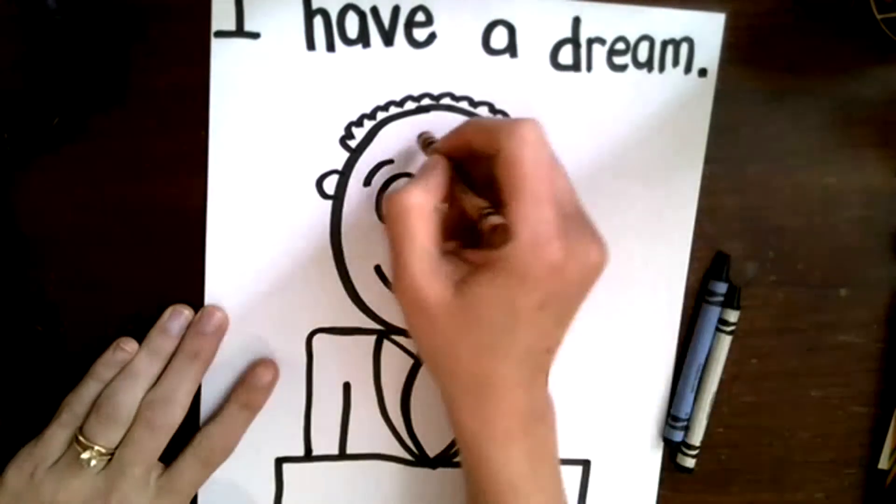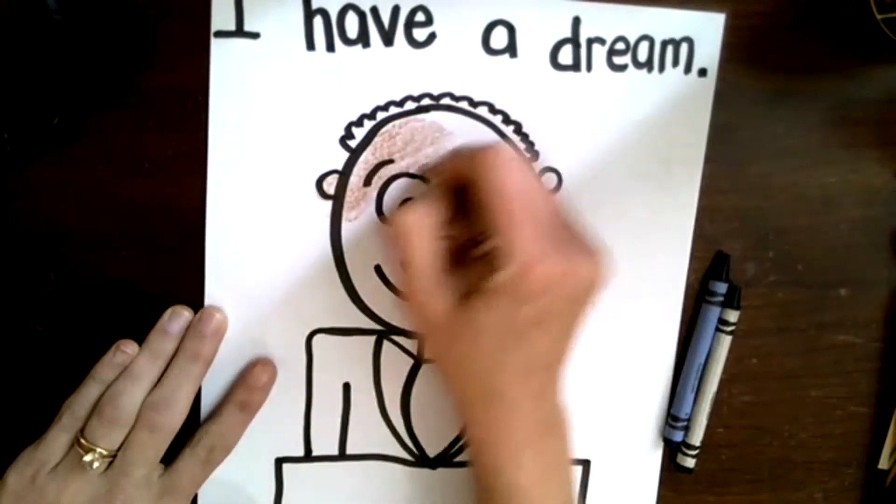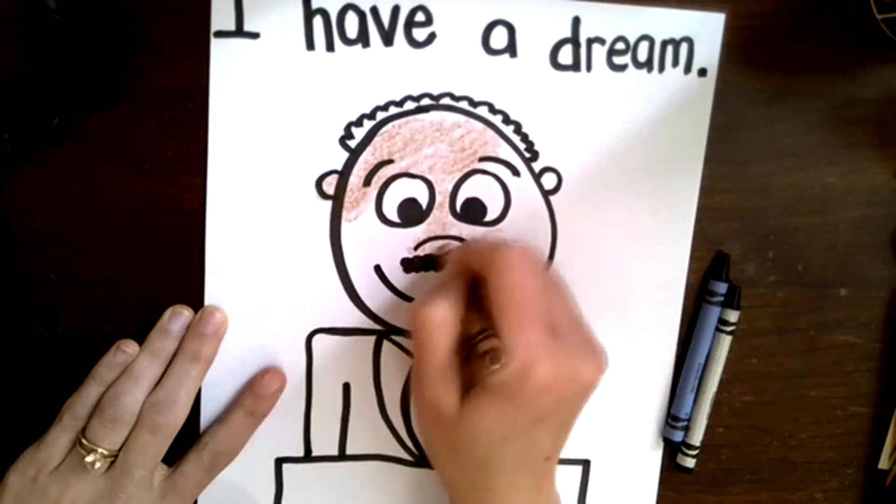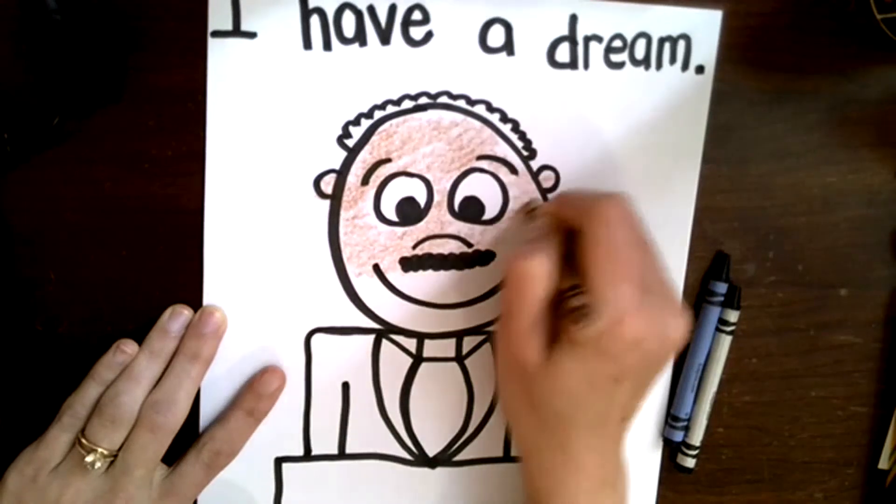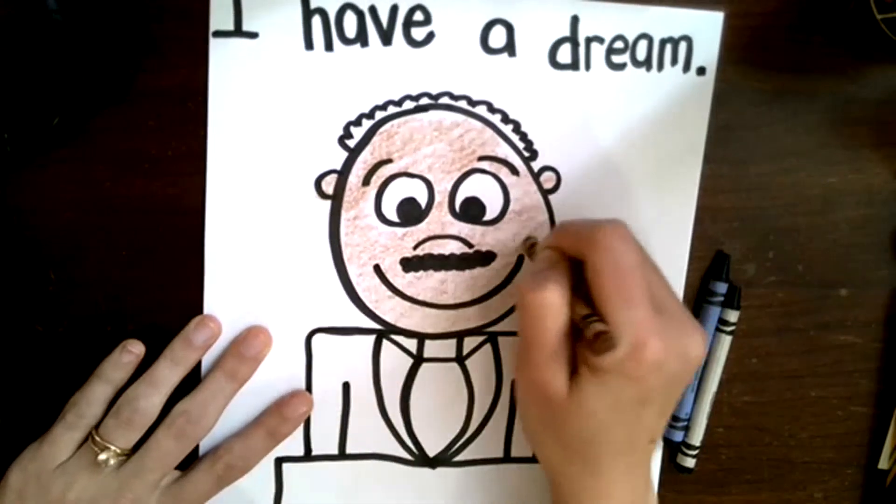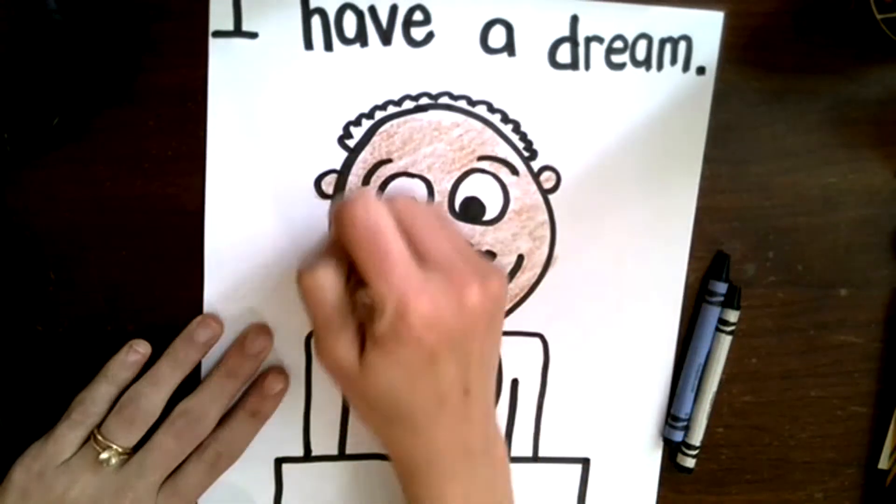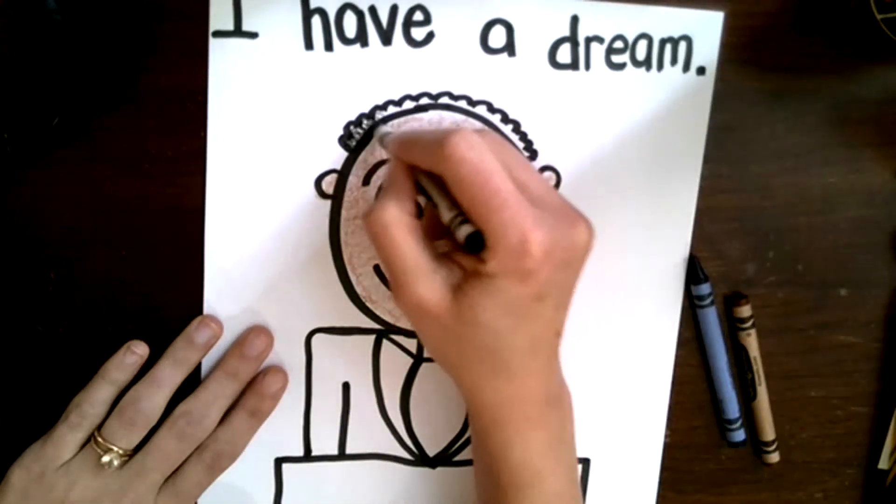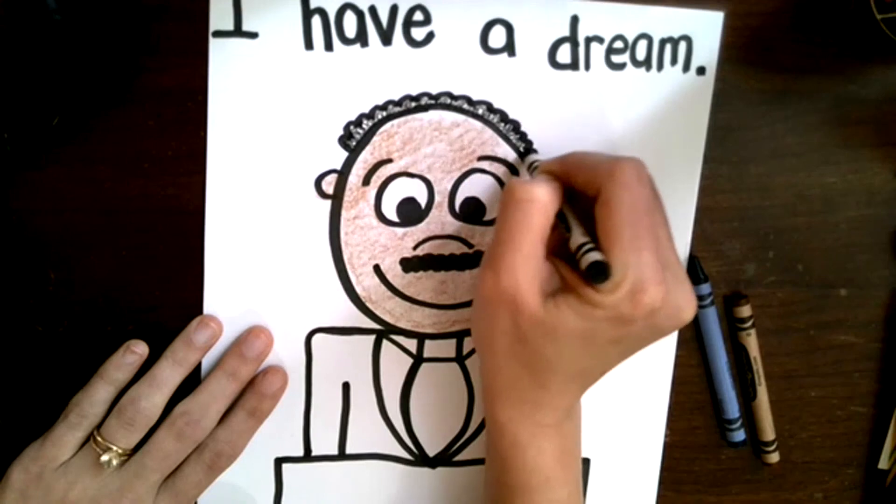Alright, I'm going to color Martin Luther King Jr.'s skin brown. And you can color his hair black. Now I'm going to move my crayon in little circles to give Martin Luther King Jr.'s hair a little detail.